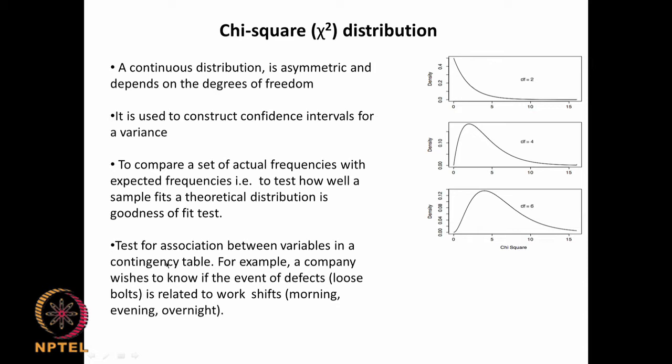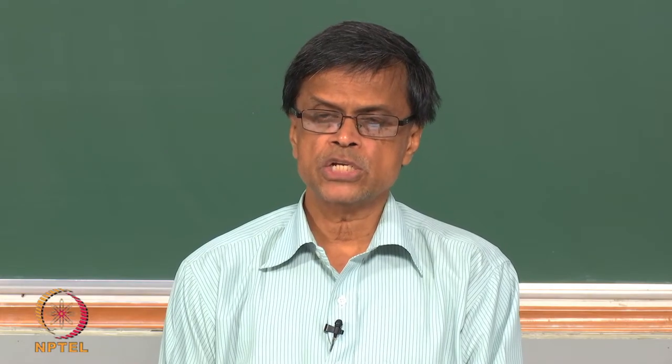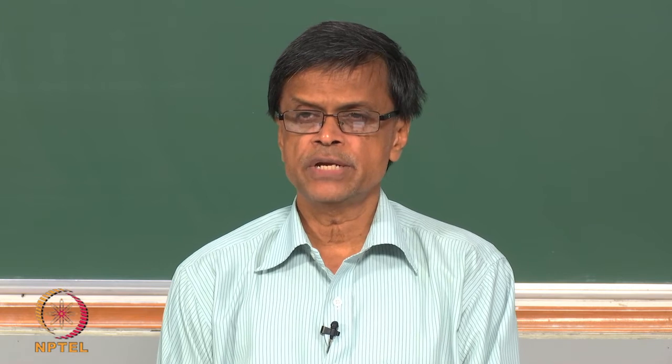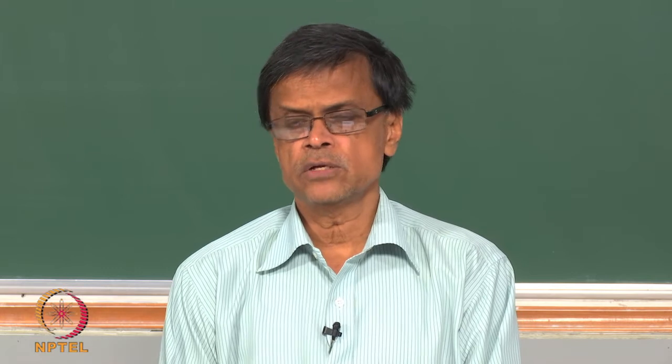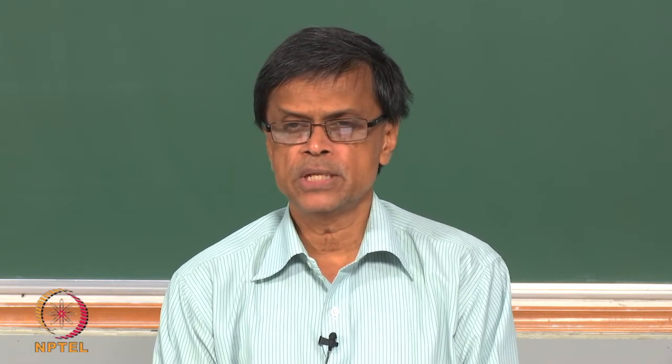Chi-square also looks at association between variables in a contingency table, which we will discuss later. For example, I make parts using 3 or 4 different equipment and find defects in each. Defect vs. non-defect across equipment 1, equipment 2, equipment 3 — is there a relationship between defects and the equipment used? We can use the chi-square test for that.